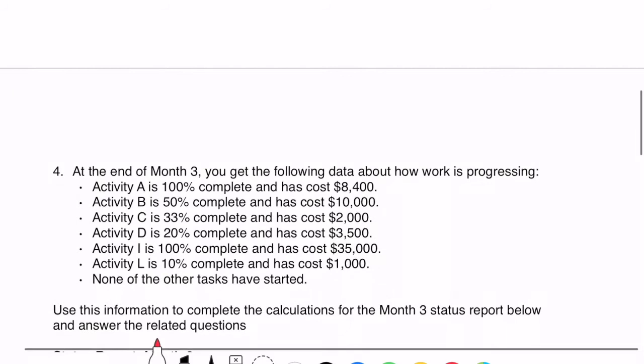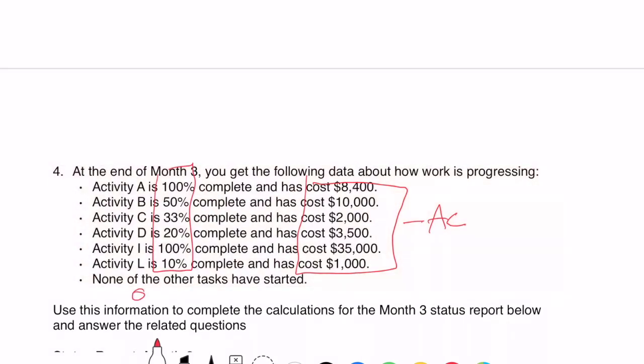At the end of month three, you get the following data about how the work is progressing. And it gives you the actual costs. So our accountants have given us this value. This is our actual costs. This is our percent complete. Okay, and for all the other tasks, it's going to be zero percent. And we can use this to calculate earned value.